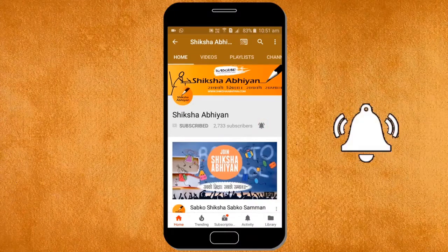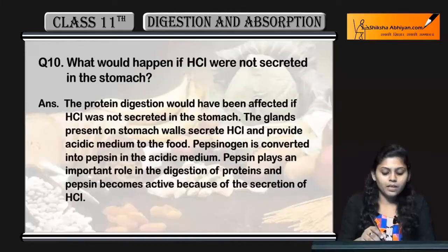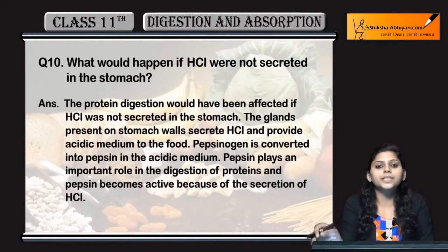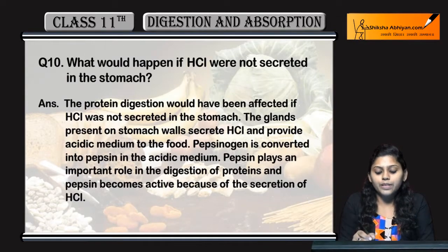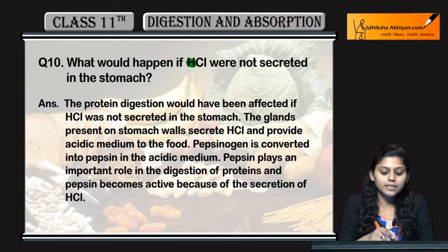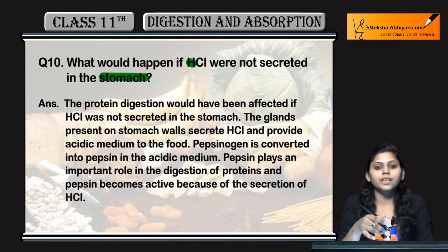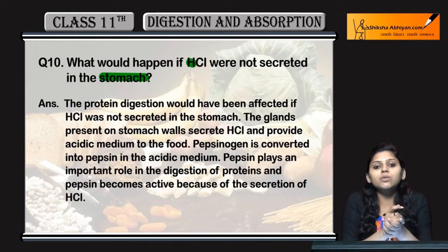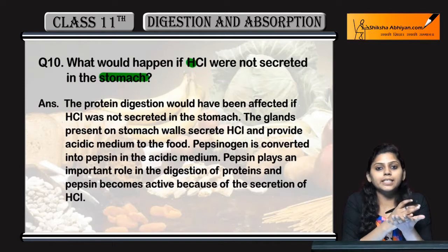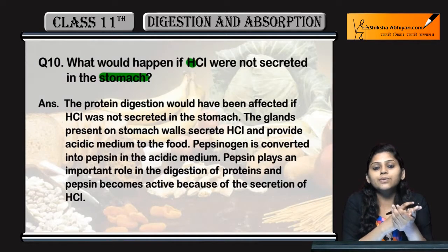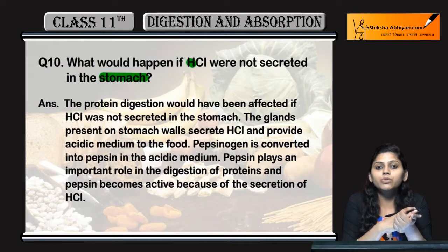Coming to question number 10: what would happen if HCl were not secreted in the stomach? The stomach has an acidic medium, and this acidic medium is because of HCl. HCl has a pH of around 2.